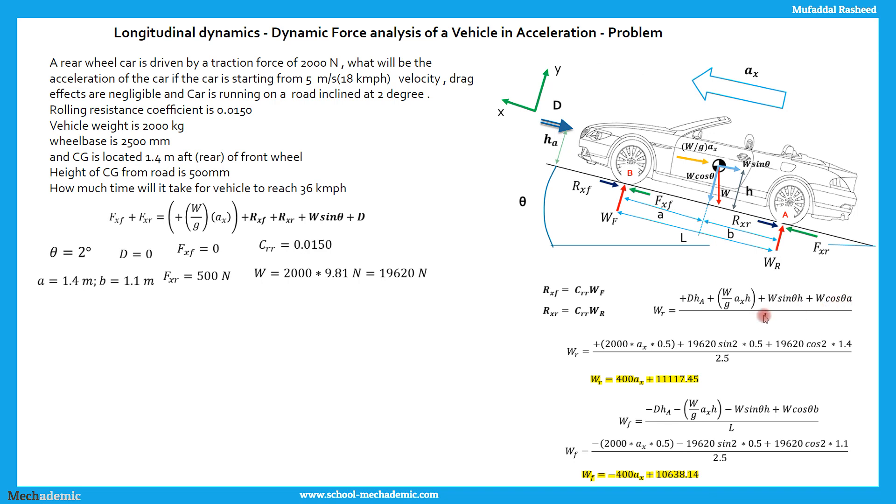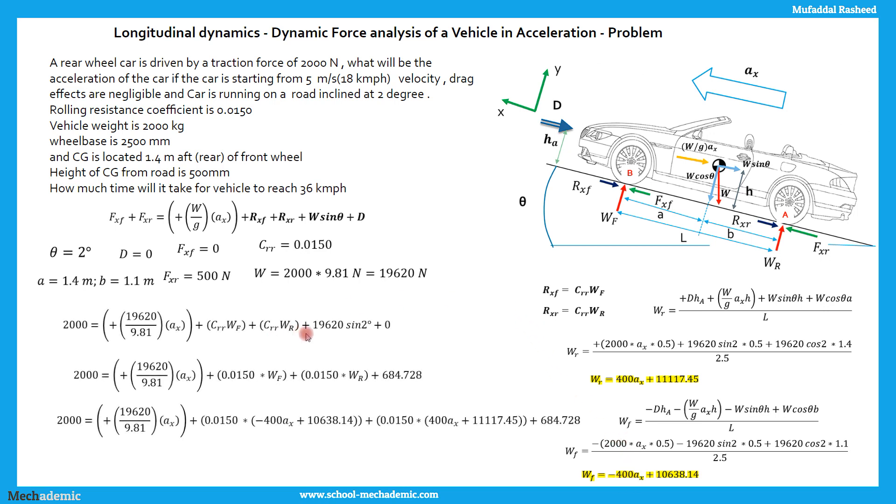Substituting all the values, we get WR in terms of Ax. So WR is equal to 400 Ax plus 11,117.45 and Wf is in terms of Ax again. Substituting the values we will get Wf and Wr. So substituting the equation over here, in place of Rxf and Rxr we are replacing CRR Wf and CRR Wr, and in place of Wf and Wr we are replacing these terms. This one here and this one here we are replacing in place of Wf and Wr.